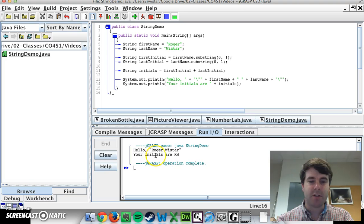And so now we can see here's the output, here's my concatenated variable with initials in it, and here is my line that contains the escape sequence for the double quotes.